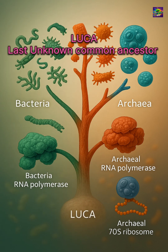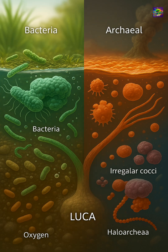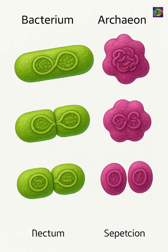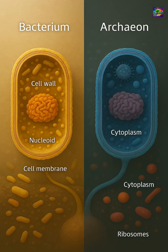For decades, scientists grouped them together, but we now know that bacteria and archaea represent two of the three major branches in the tree of life. Both are prokaryotes, meaning they lack a true nucleus. Both reproduce asexually, typically through binary fission, and both are found in virtually every environment — from soil and seawater to human guts and even extreme environments. But the structural and biochemical differences between them are profound.